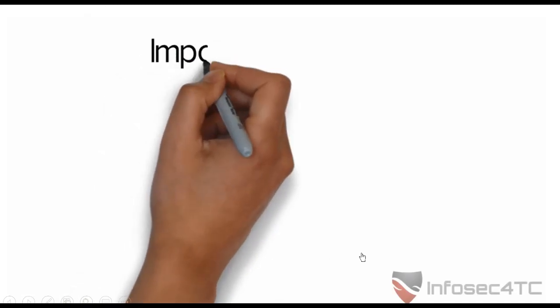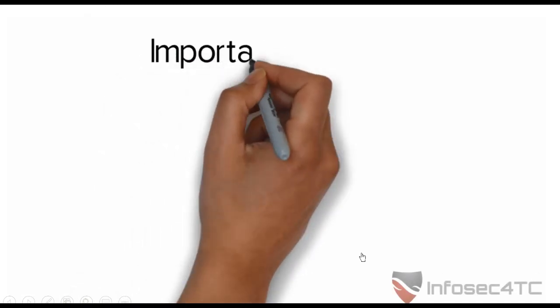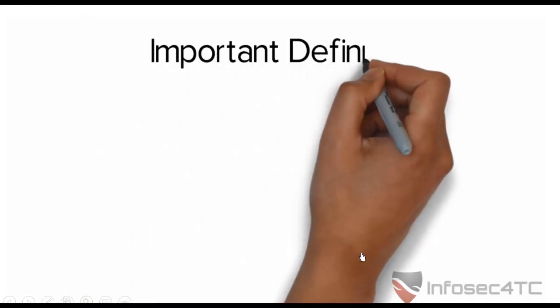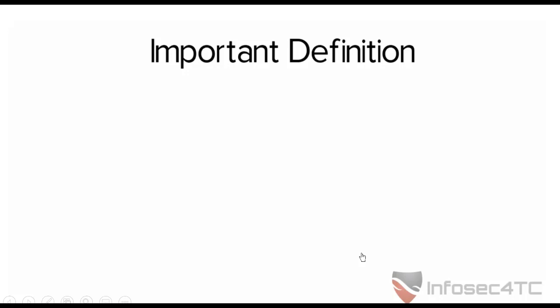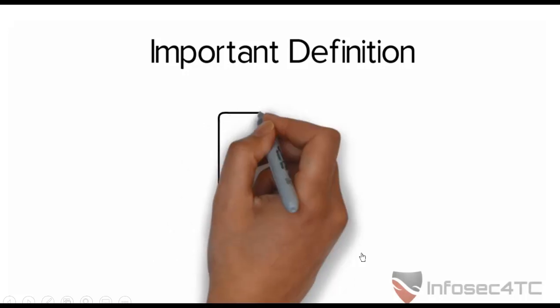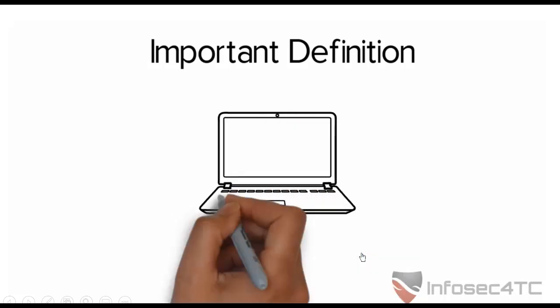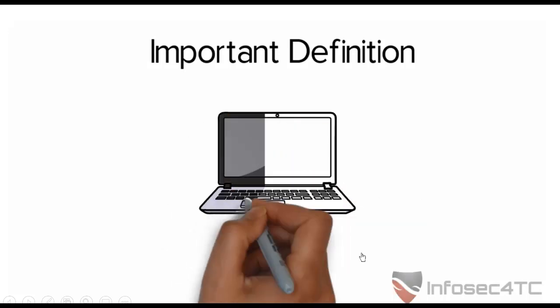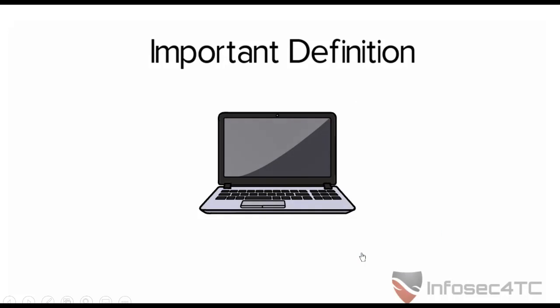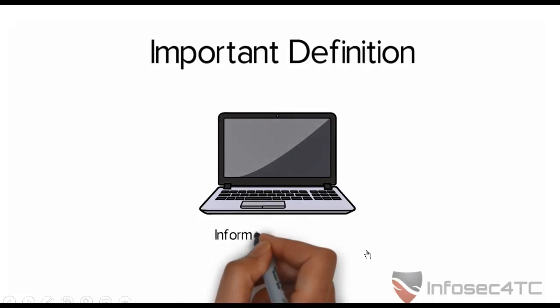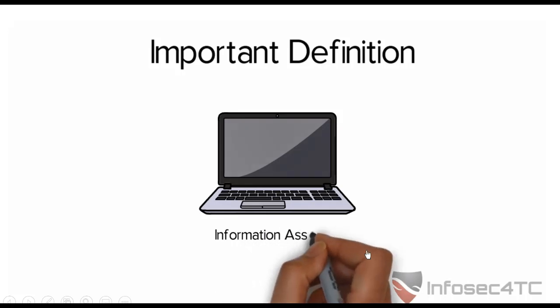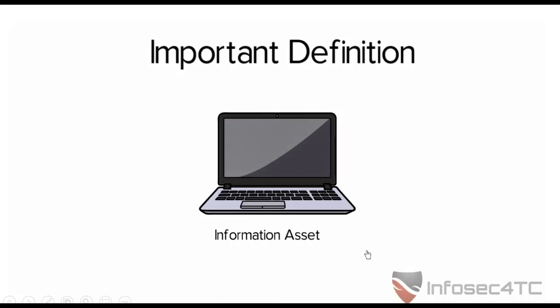This lecture will explain some of the most important information security definitions in a simplified way. We're going to start by explaining information assets. In security, an information asset is anything that includes information, so it could be a laptop — the laptop could include personal information, financial information, any kind of information. This is called an information asset.